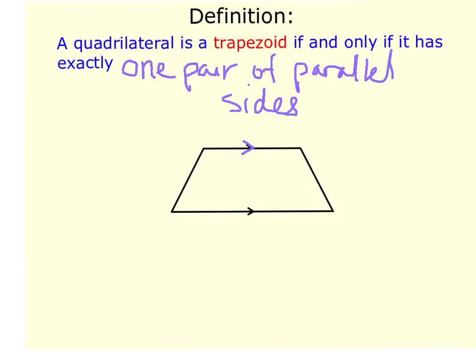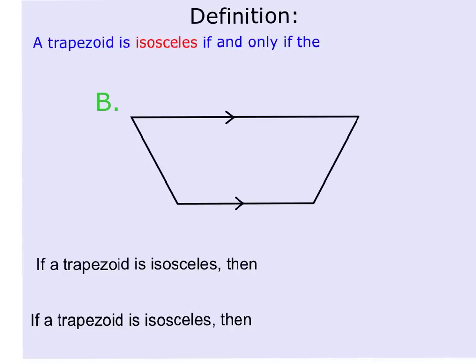Here we see these are the sides that are parallel. You can tell that these two sides are not parallel, and that's what makes this a trapezoid.